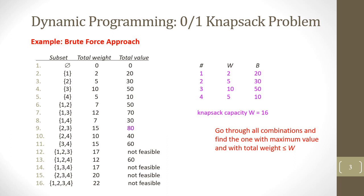Given four items with specific weights and benefits and a knapsack capacity of 16, if we use the brute force approach, we find all possible combinations of subsets from these four items, find out their total weight and total value, and select the one with maximum value and total weight less than or equal to the capacity. Non-feasible combinations are ignored since the weight has exceeded the capacity. For the remaining subsets, we look at the total value which is the maximum. In this case, item 2 and item 3 give us the maximum total benefit of 80.